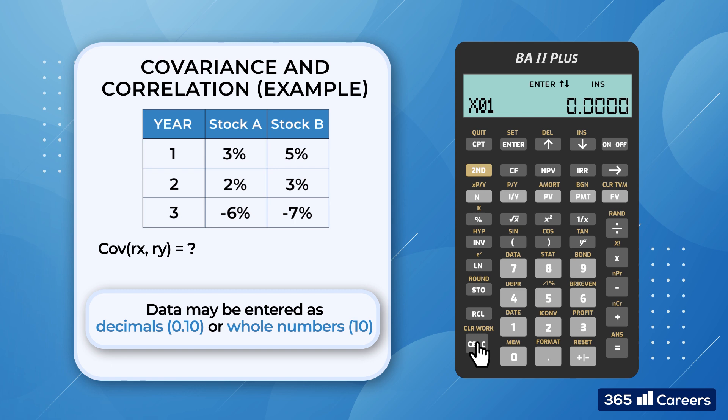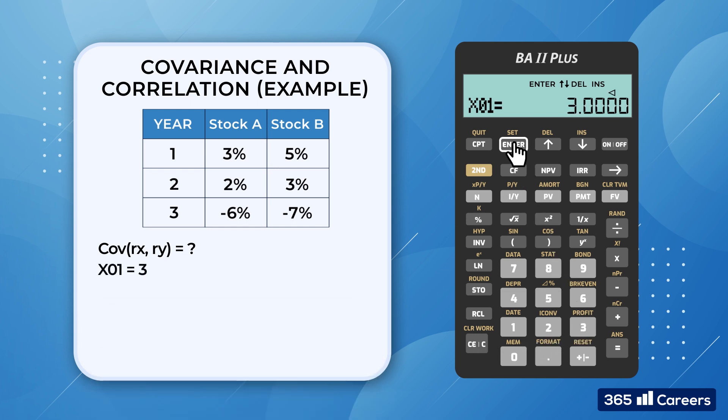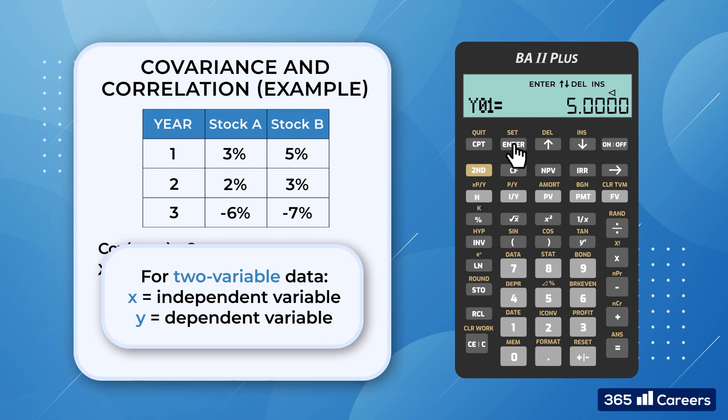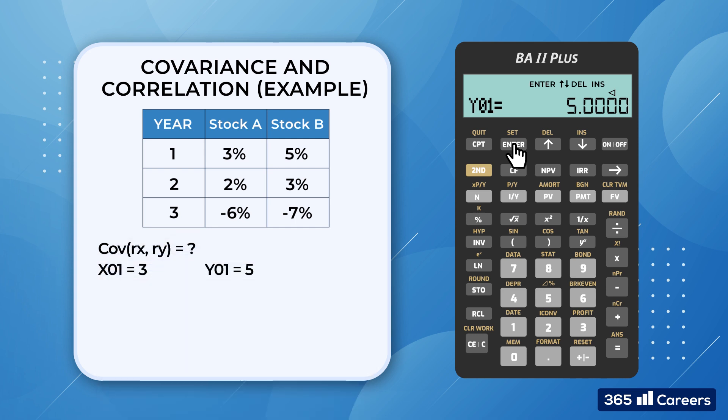We could enter values as decimals or whole numbers. We opt for the latter choice. x01 equals 3 and y01 is 5. This time, we analyze a two-variable data set. Therefore, y no longer specifies the number of occurrences. We use it to enter the relevant values of the second variable. In other words, the stock returns of B. We scroll down further, x02 is 2 and y02 is 3. In year 3, we have x03 and y03, which equal minus 6 and minus 7 respectively.